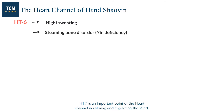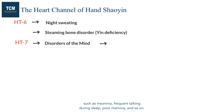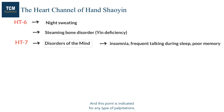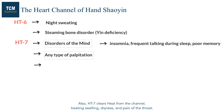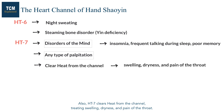Heart 7 is an important point of the heart channel for calming and regulating the mind. This point has a variety of indications related to disorders of the mind, such as insomnia, frequent talking during sleep, poor memory, and so on. This point is indicated for any type of palpitations. Heart 7 also clears heat from the channel, treating swelling, dryness, and pain of the throat.